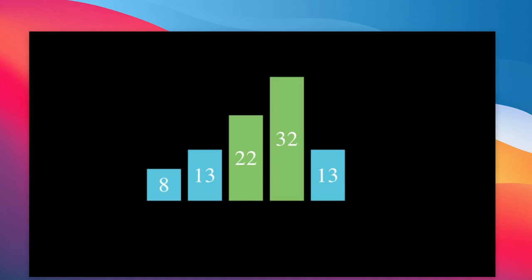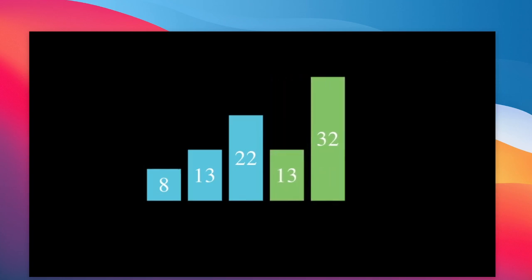That's why we will now select 32 as our current element and try to compare it with the next element. In this example, 32 will be compared with 13. Because 32 is greater than 13, we will swap the positions between 32 and 13. So 32 after swapping will be at the end of the array, and we got our first element in sorted order. Note that 22 is not yet sorted, but 32 is sorted.